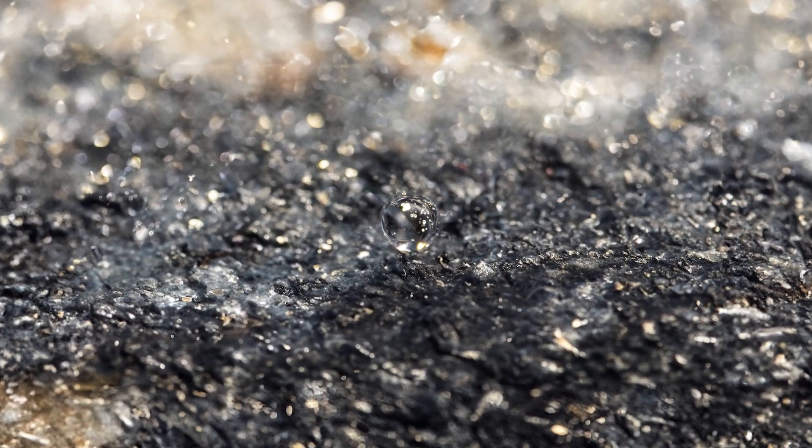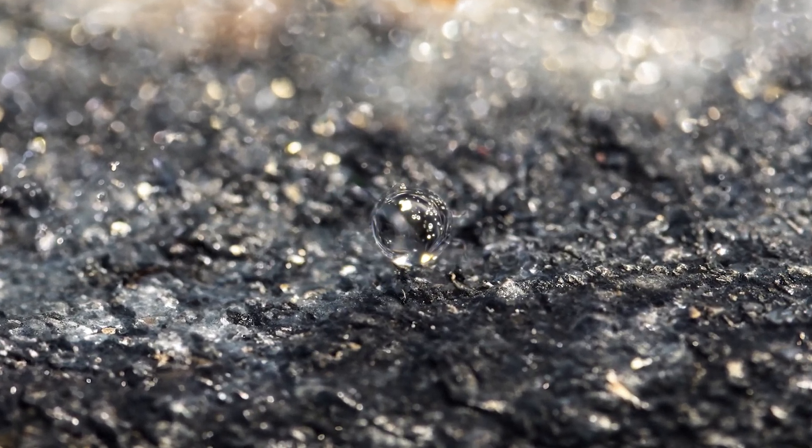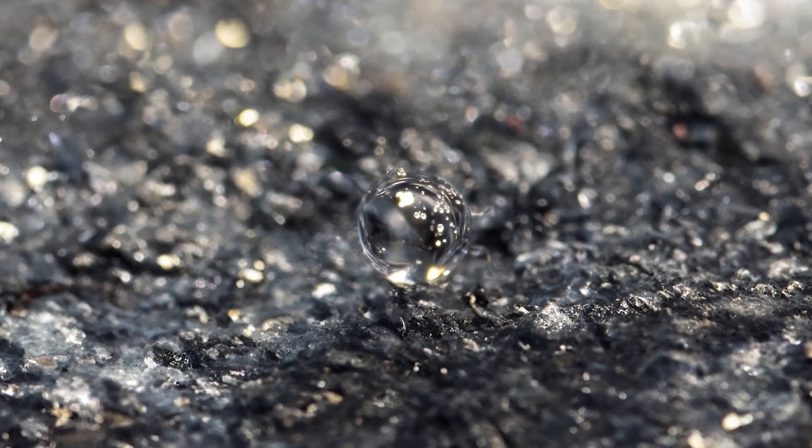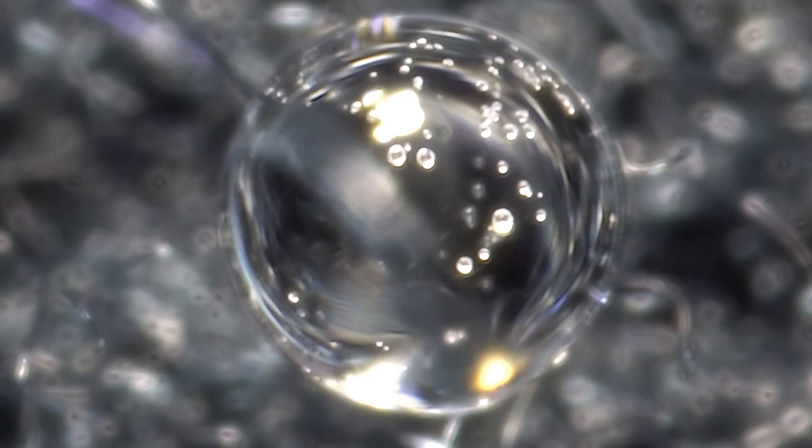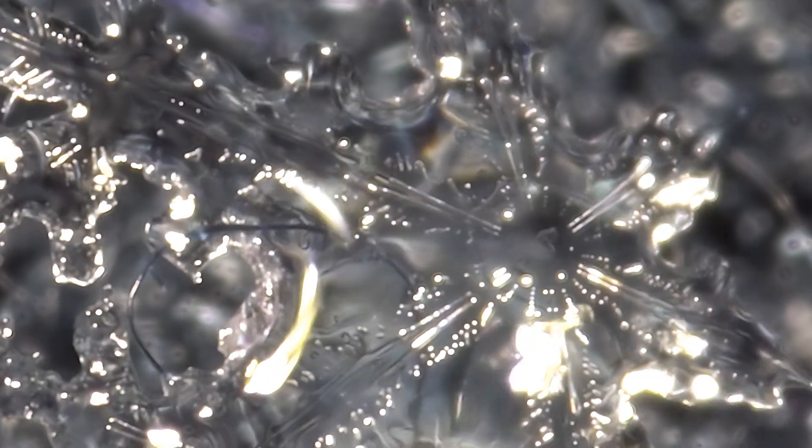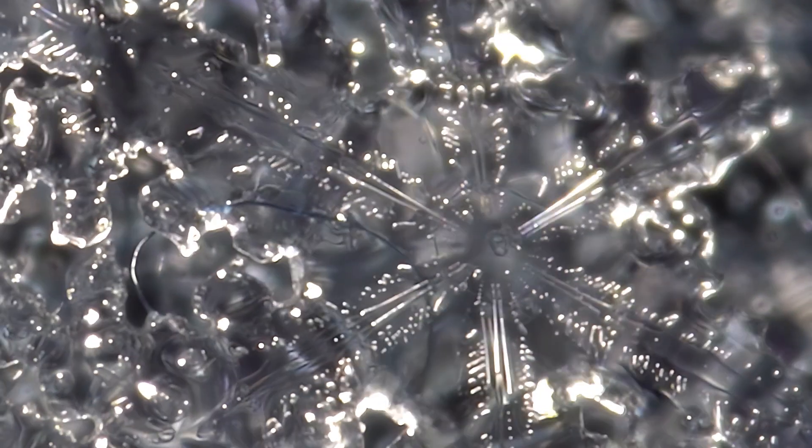Each arm or branch of a snowflake is a separate crystal, and the conditions under which it forms, such as temperature and humidity, determine the intricate details of its structure. This variability results in the intricate and diverse shapes of individual snowflakes.